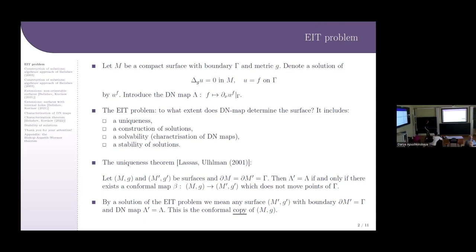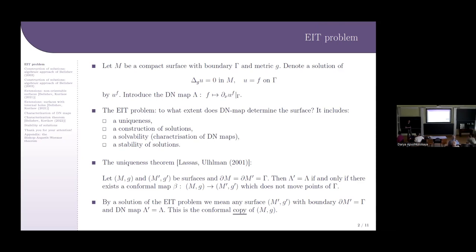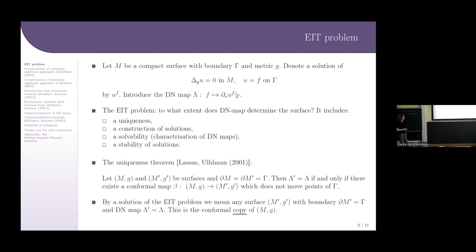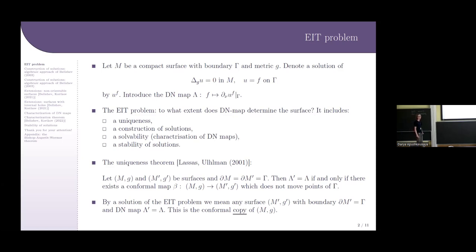It contains four sub-questions: uniqueness, construction of solutions, characterization of DN maps, and stability of solutions. The question on uniqueness was answered by Lassas and Uhlmann. Let M with metric g and M prime with metric g prime be surfaces with joint boundary gamma. Then their DN maps coincide if and only if there is a conformal map between them which does not move points of the boundary gamma. So the DN map determines not the surface but only its conformal class.